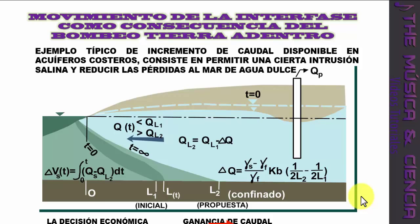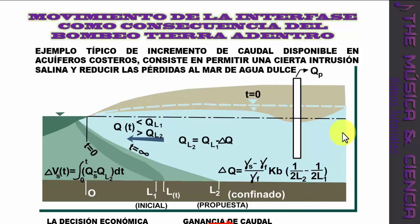Otro caso es el movimiento de la interfase como consecuencia del bombeo tierra adentro. En algunos casos se sacrifica parte del acuífero: hay intrusión salina algunos kilómetros pero se aprovecha el agua dulce disponible durante un tiempo. A medida que se sigue presionando y sacando agua dulce, la intrusión salina llega más tierra adentro. Esto se aplica a un acuífero confinado.